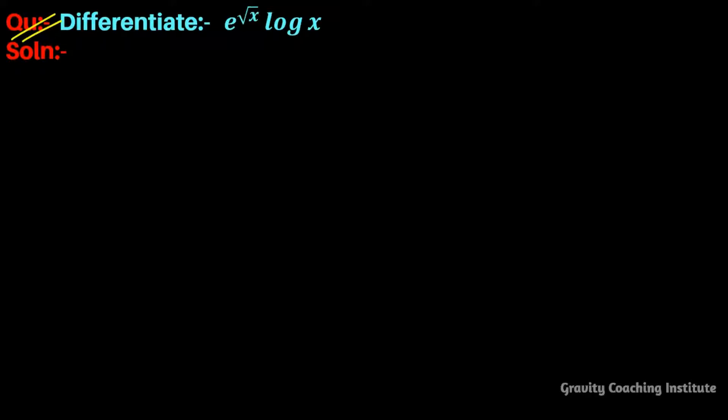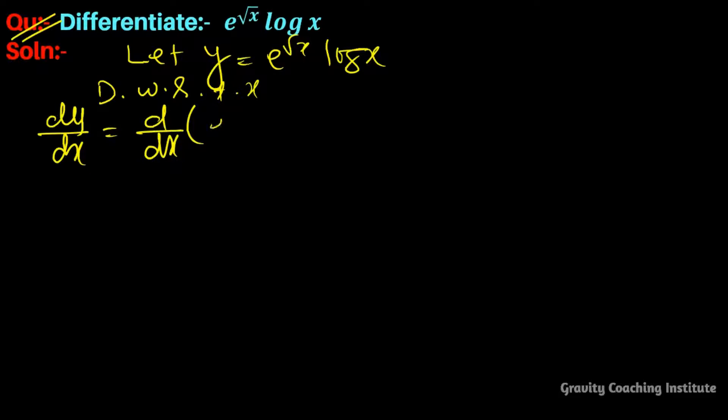Question: Differentiate e to the power root x log x. So first of all we let y equal to e to the power root x log x. Differentiate with respect to x, dy upon dx equal to d by dx of e to the power root x log x.